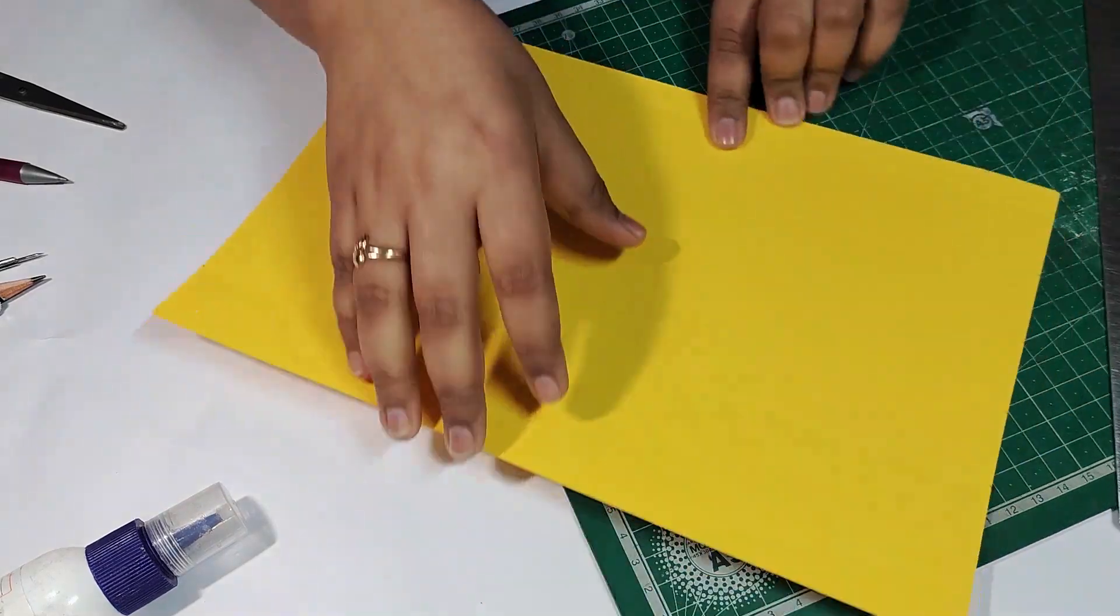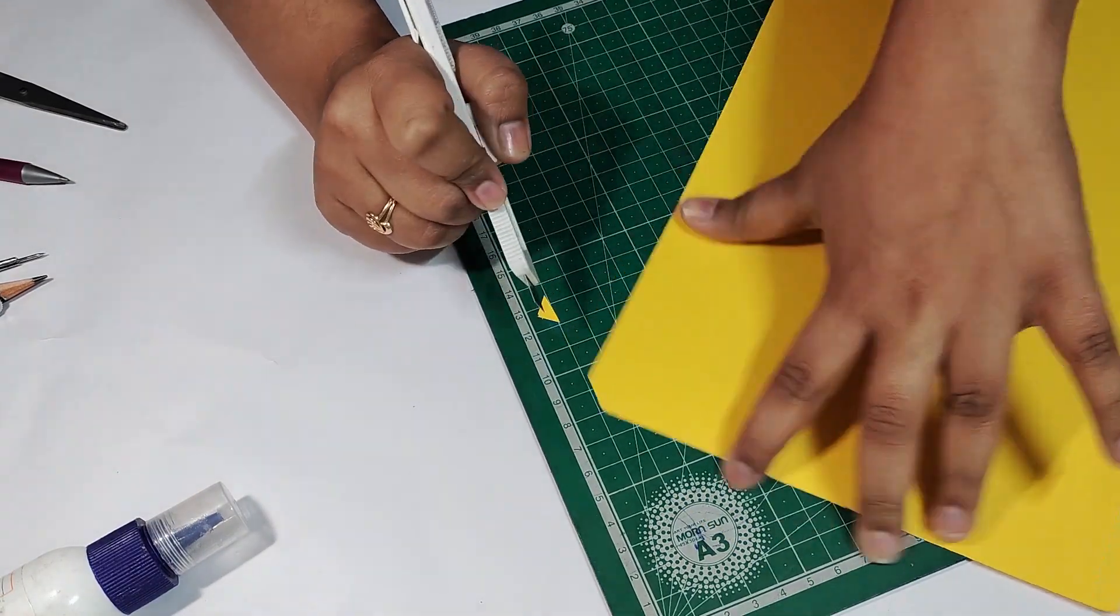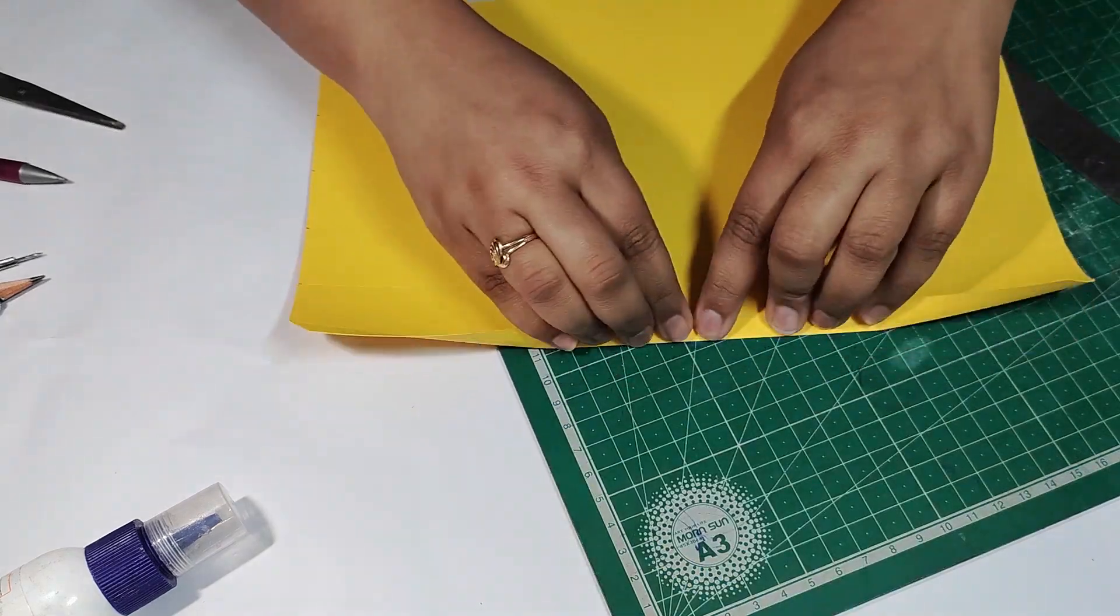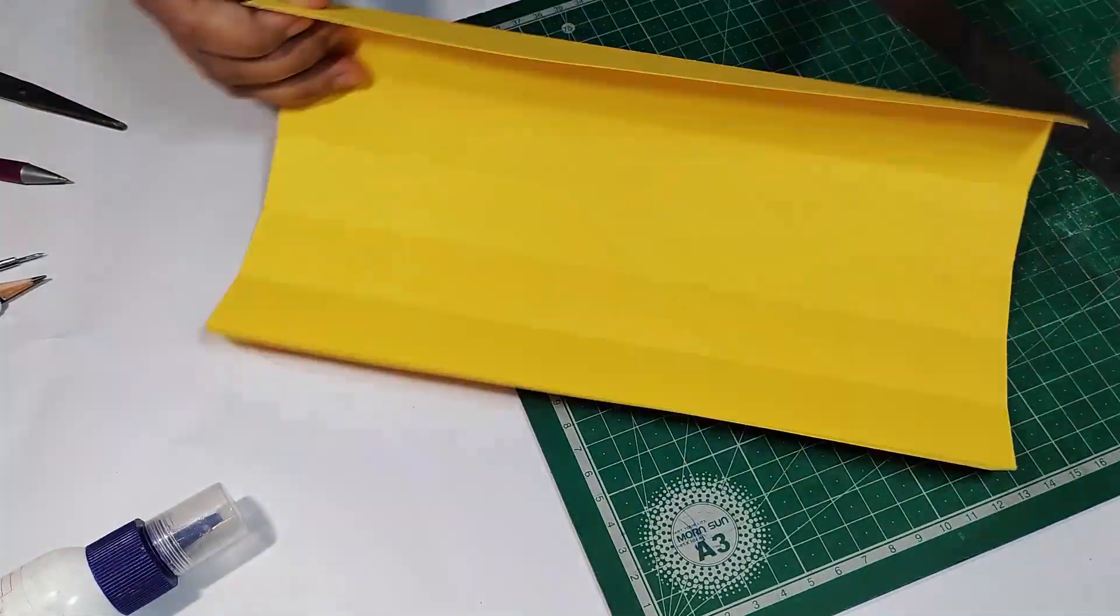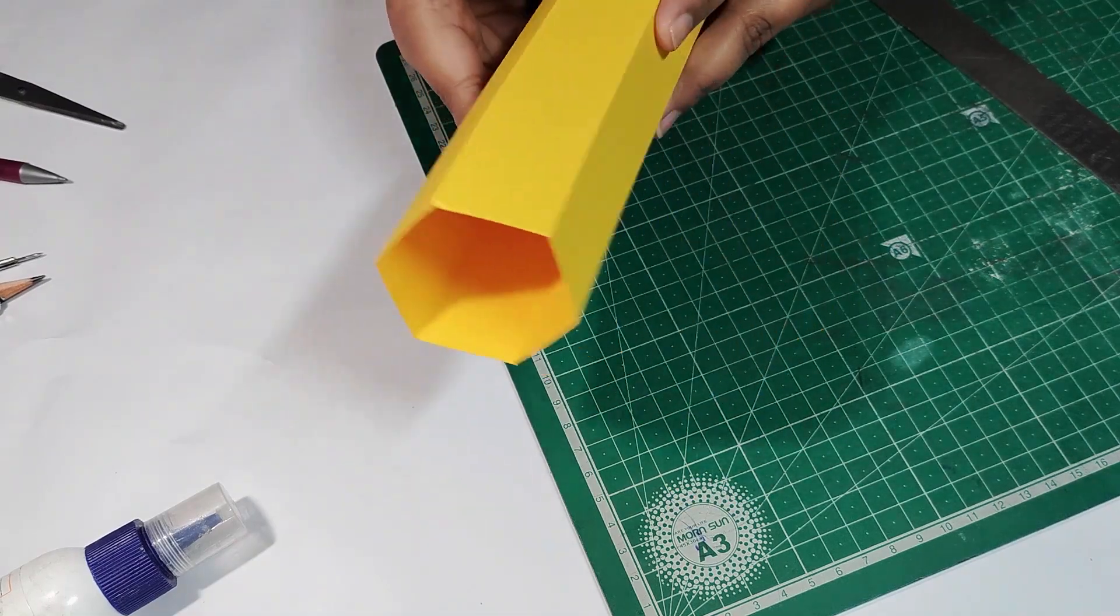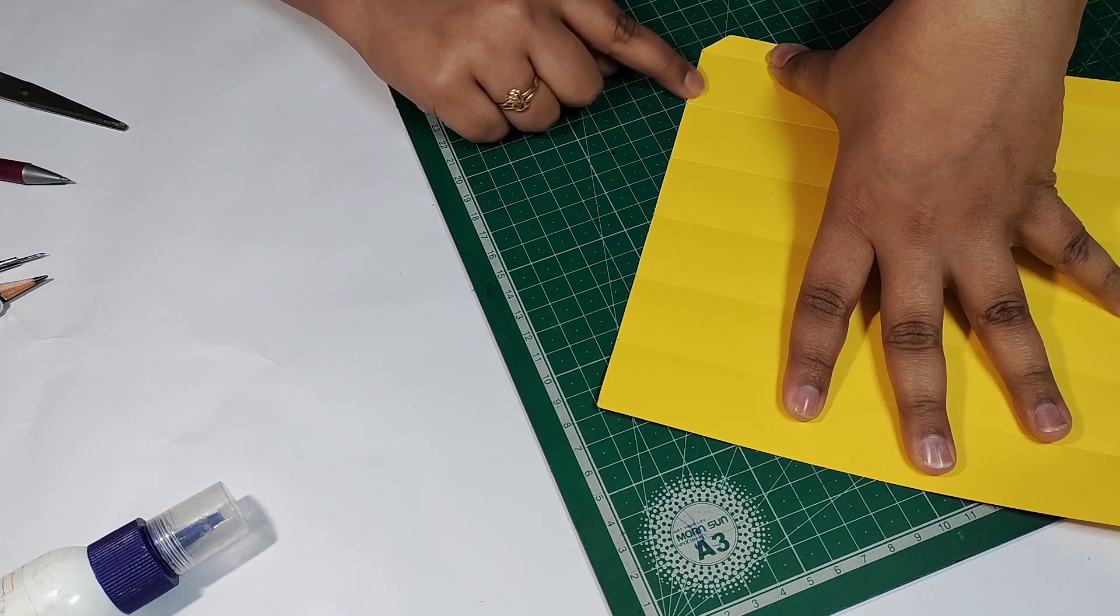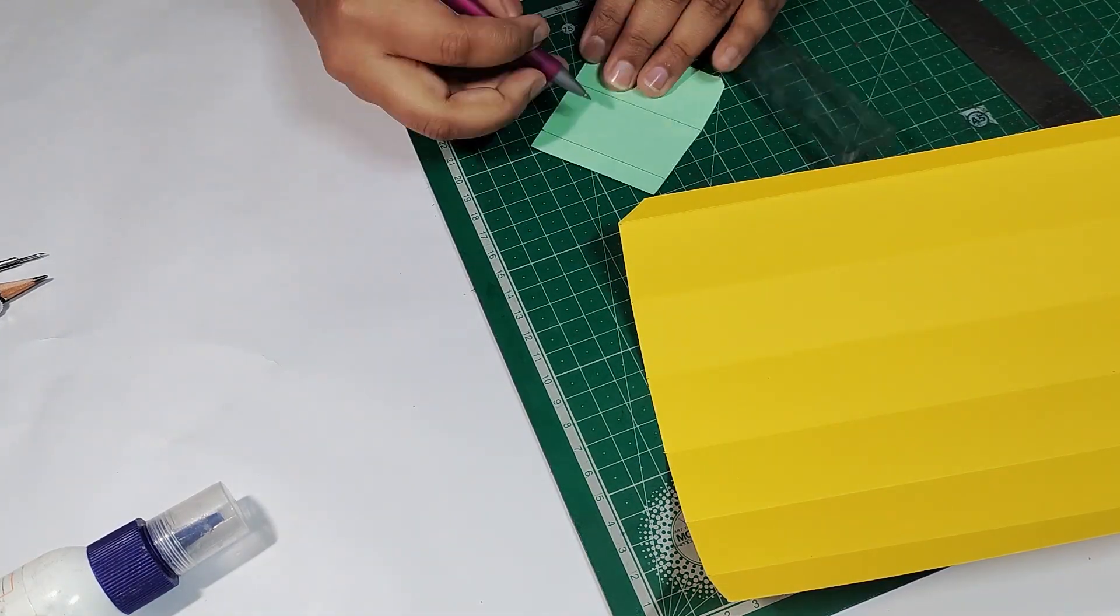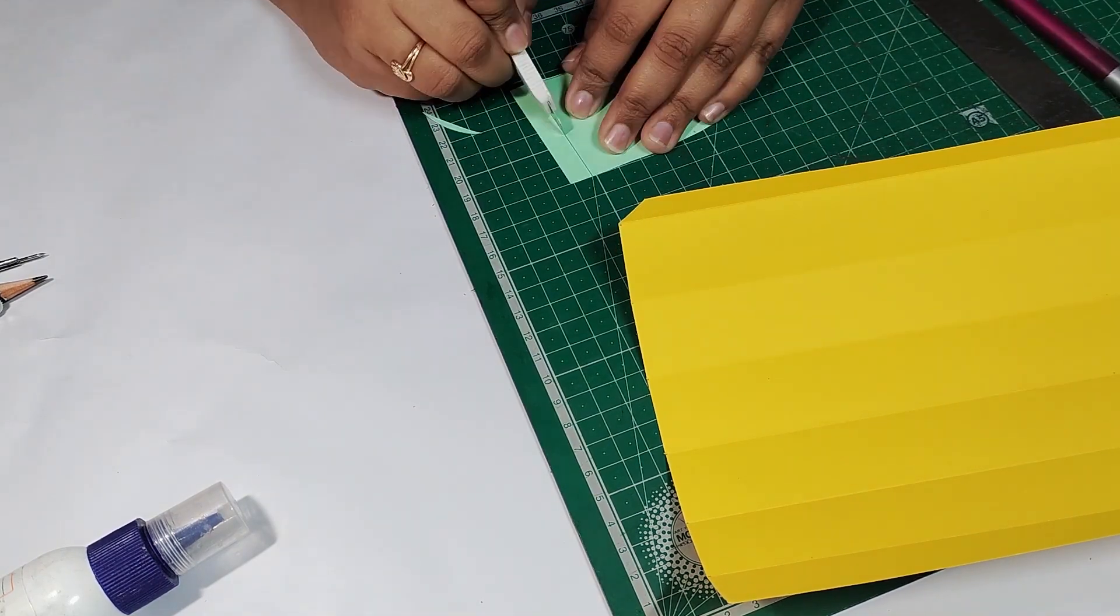Now we will quickly fold all the folding edges and create a notch on the pasting edge. As we can see, the front edge of the pencil has some detailing, so to make that detailing I am using a stencil.